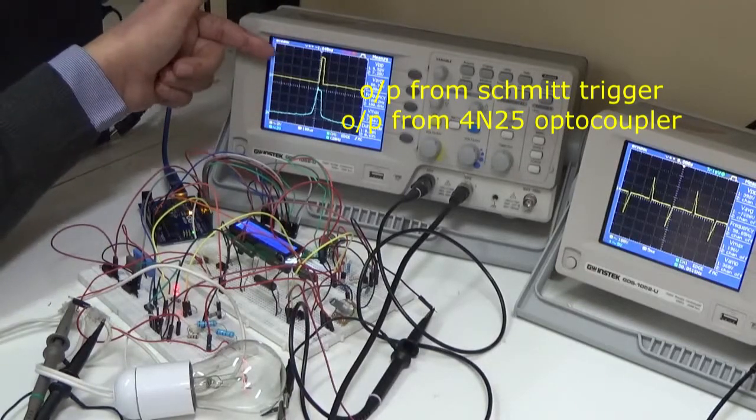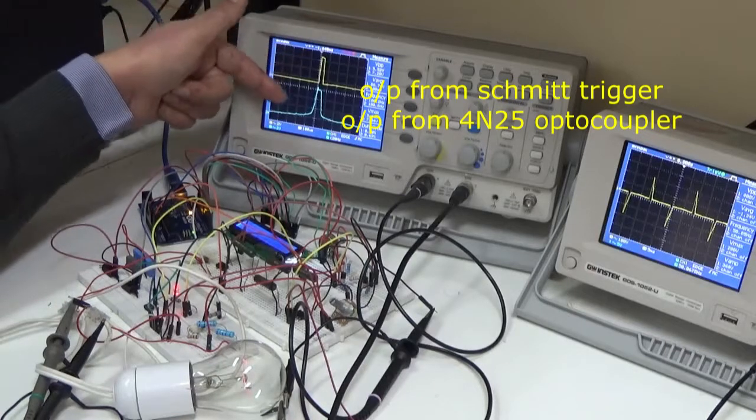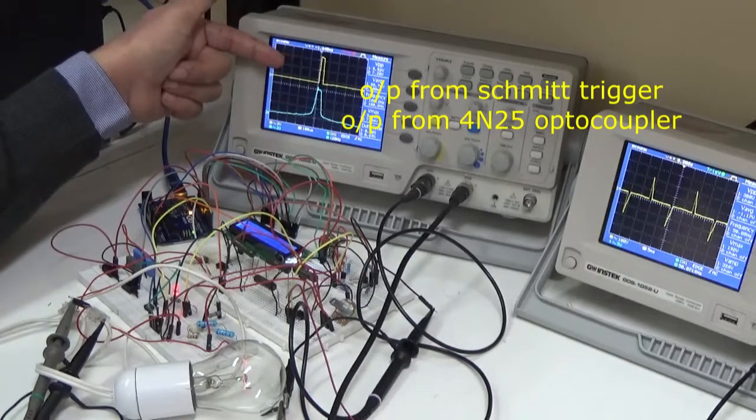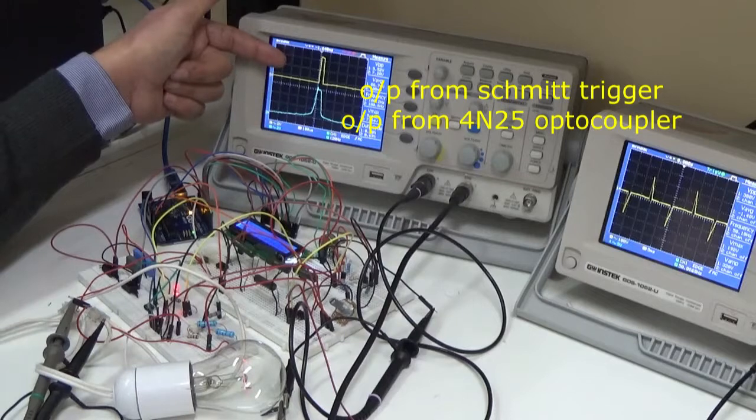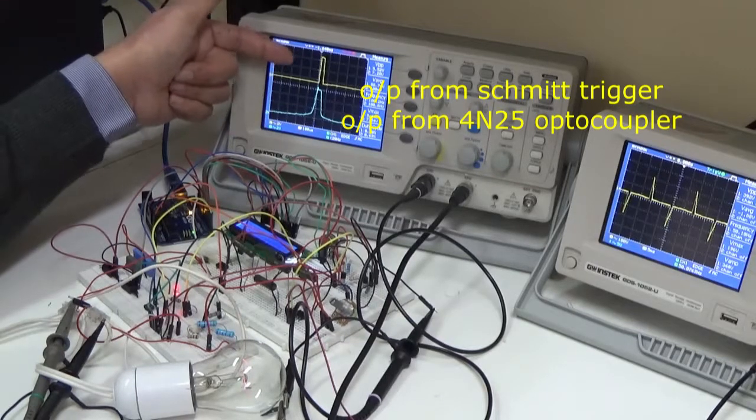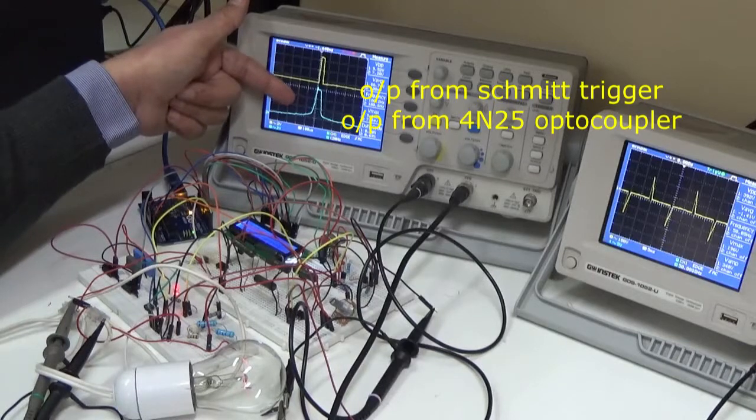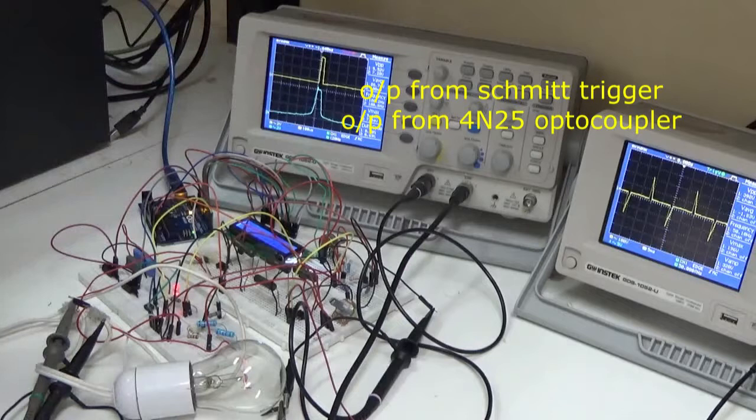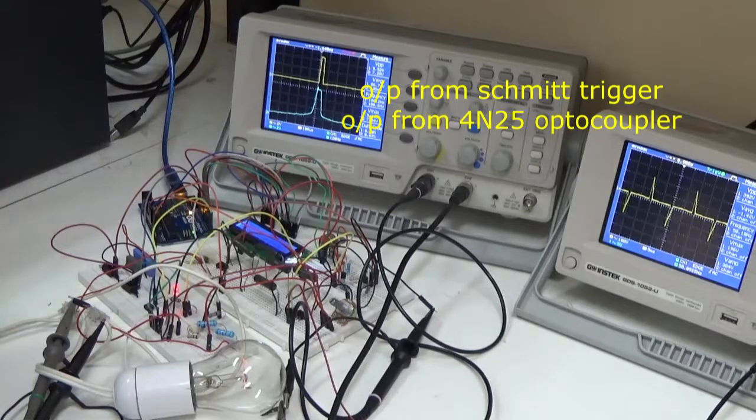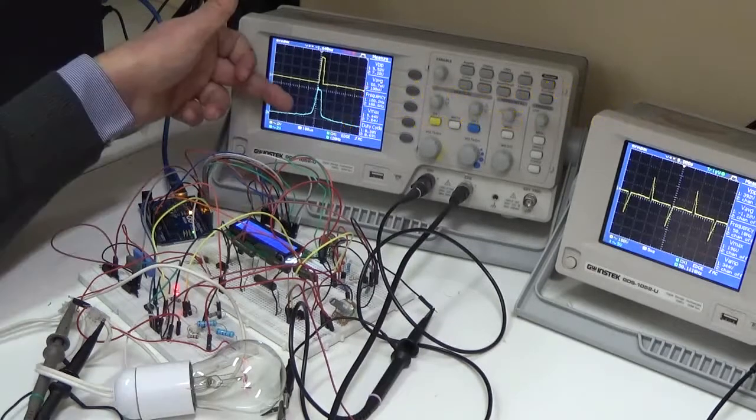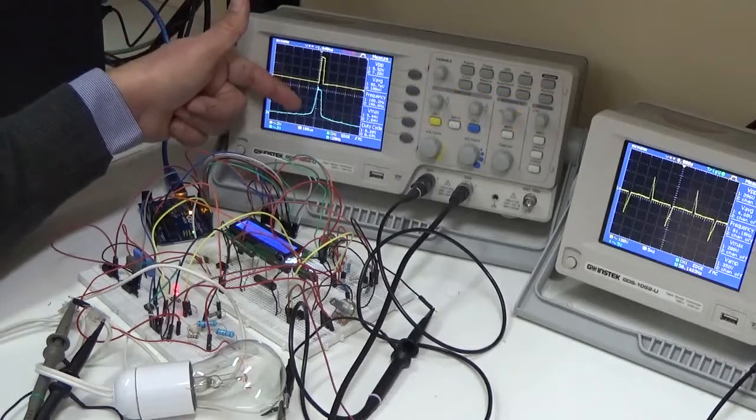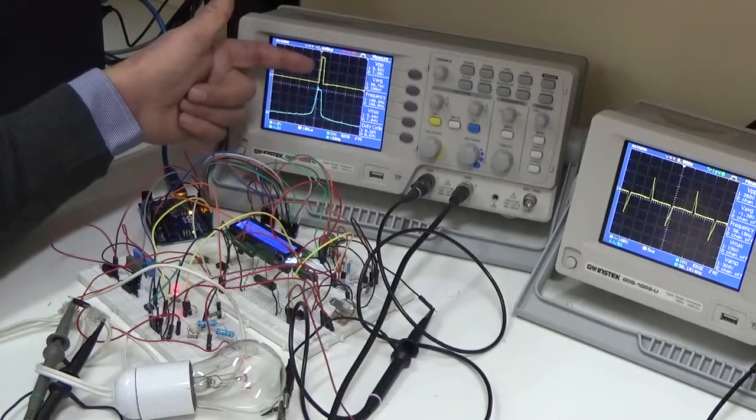We have two channels. Channel one is describing the pulse that's coming from the Schmidt trigger output, and the second one, which has a blue color, is the pulse coming out from the optocoupler. As you can see here, there's a big difference between the two pulses. We have a clear, nice cut and rising edges in the first one.